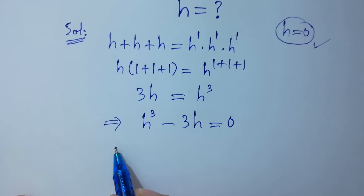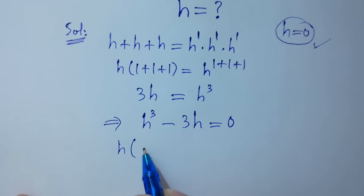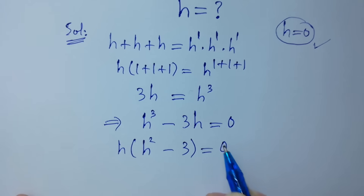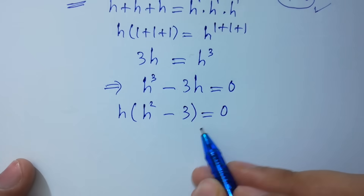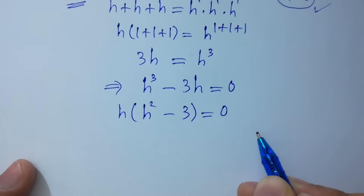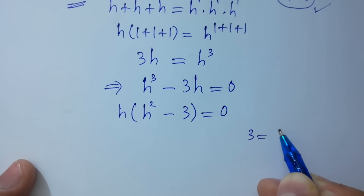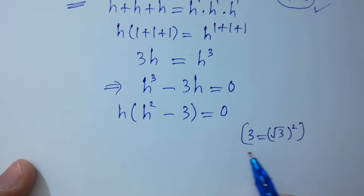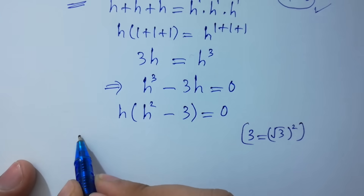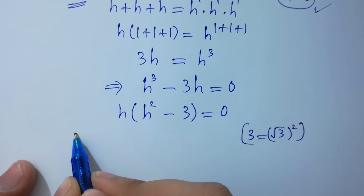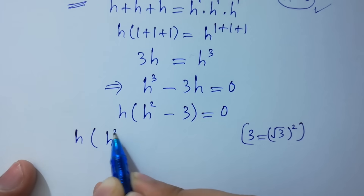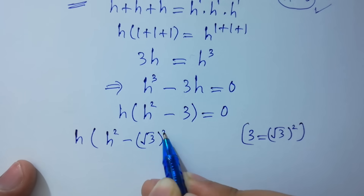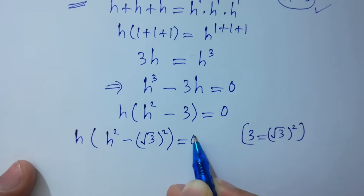Factoring out h: h times (h squared minus 3) equal to 0. Since 3h equals (square root of 3) squared, this can be rewritten as h times (h squared minus (square root of 3) squared) equal to 0.